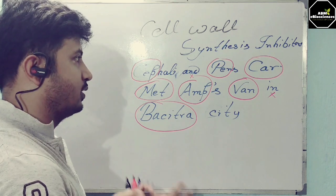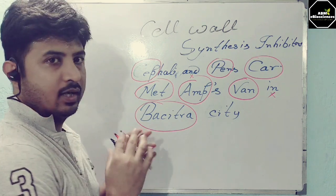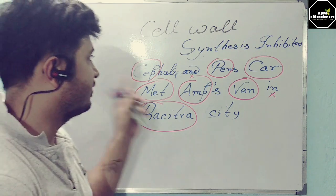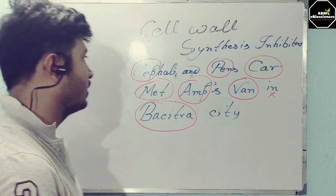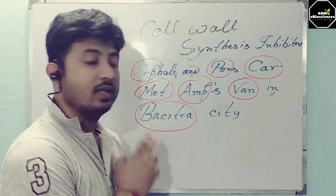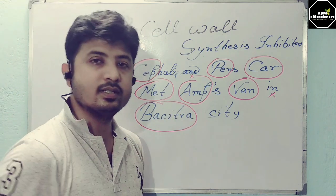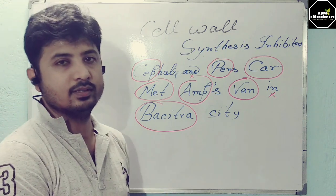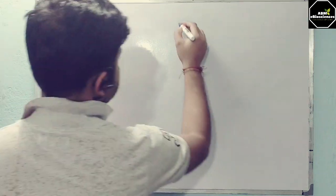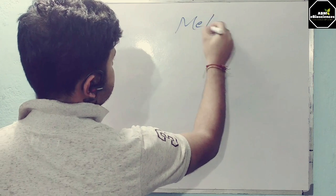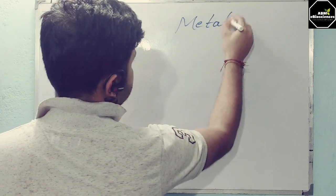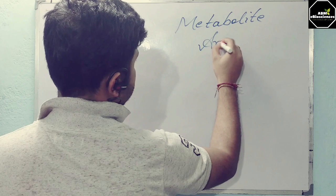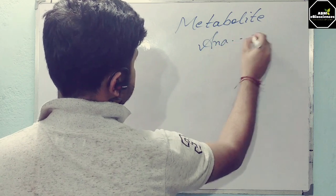This is a quick and effective memory trick. To repeat: 'Cephalene and Pins car meet Amps when in Basitra city.' That covers all the cell wall synthesis inhibitors.